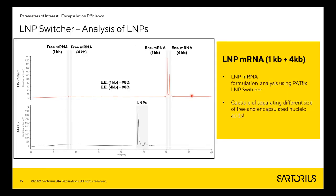That is why we developed a new approach for determination of encapsulation efficiency. Here I want to show two interesting examples of how this platform was used to analyze co-encapsulated LMPs. In one case, two different size mRNAs were co-encapsulated in the same particles — one of one kilo-nucleotide and one of four kilo-nucleotides. We achieved quite nice separation between these two mRNAs. There are two small peaks representing free mRNA, and then encapsulated mRNA, with clear MALS signal. The encapsulation efficiency determined was quite high, around 98%.